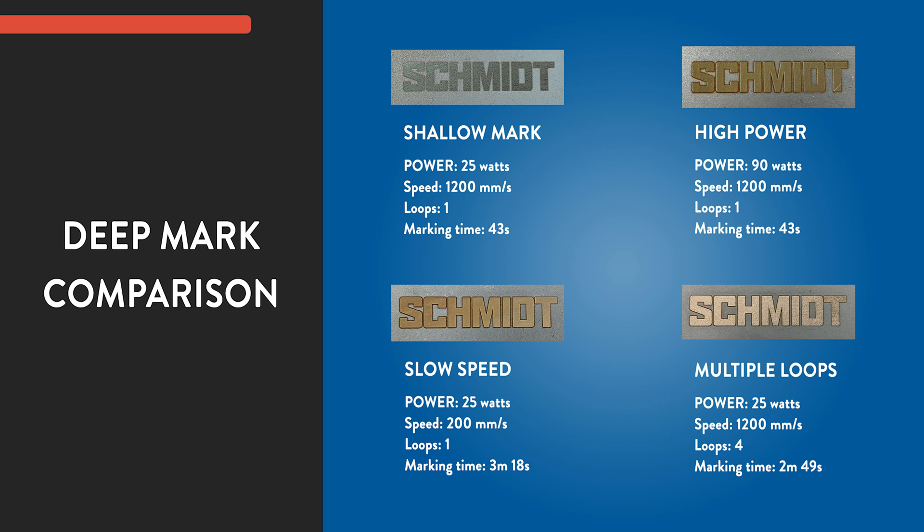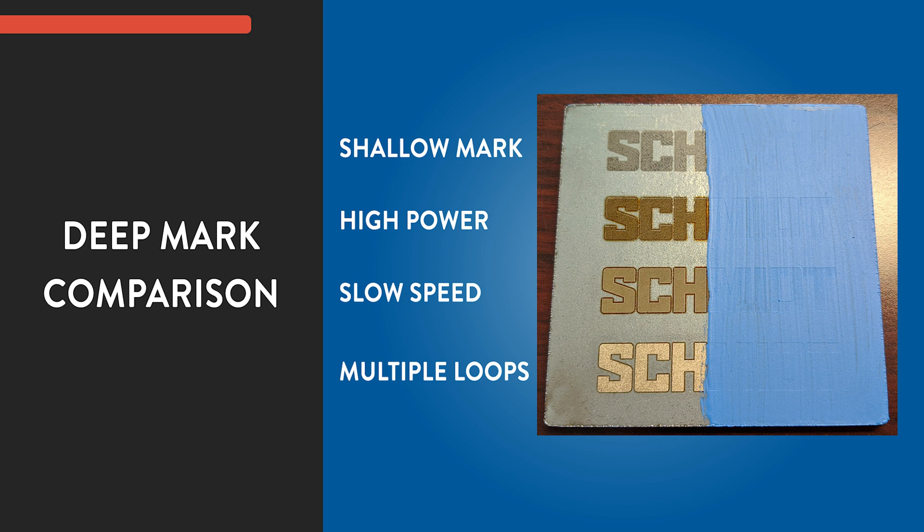So here are the marks. As you can see, all four marks look different from one another. To demonstrate the depth, we painted over a similar set of marks. You can make out the faint shapes of the letters of the deeper marks, while the shallow mark can't be seen at all.